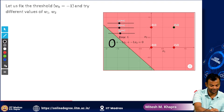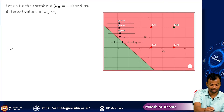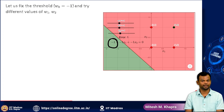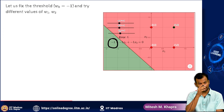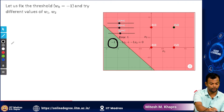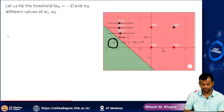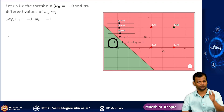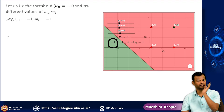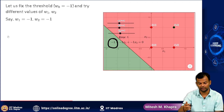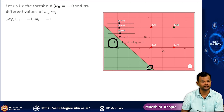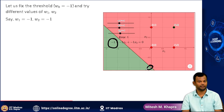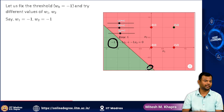So w0 is fixed to minus 1 and I will try different values of w1 and w2. It just so happens that the first value I tried was w1 = -1, w2 = -1, and that is the line I have drawn here. Since w0 is minus 1, the y-intercept is minus 1, and then I have -x1 - x2, and this is the line that I get.